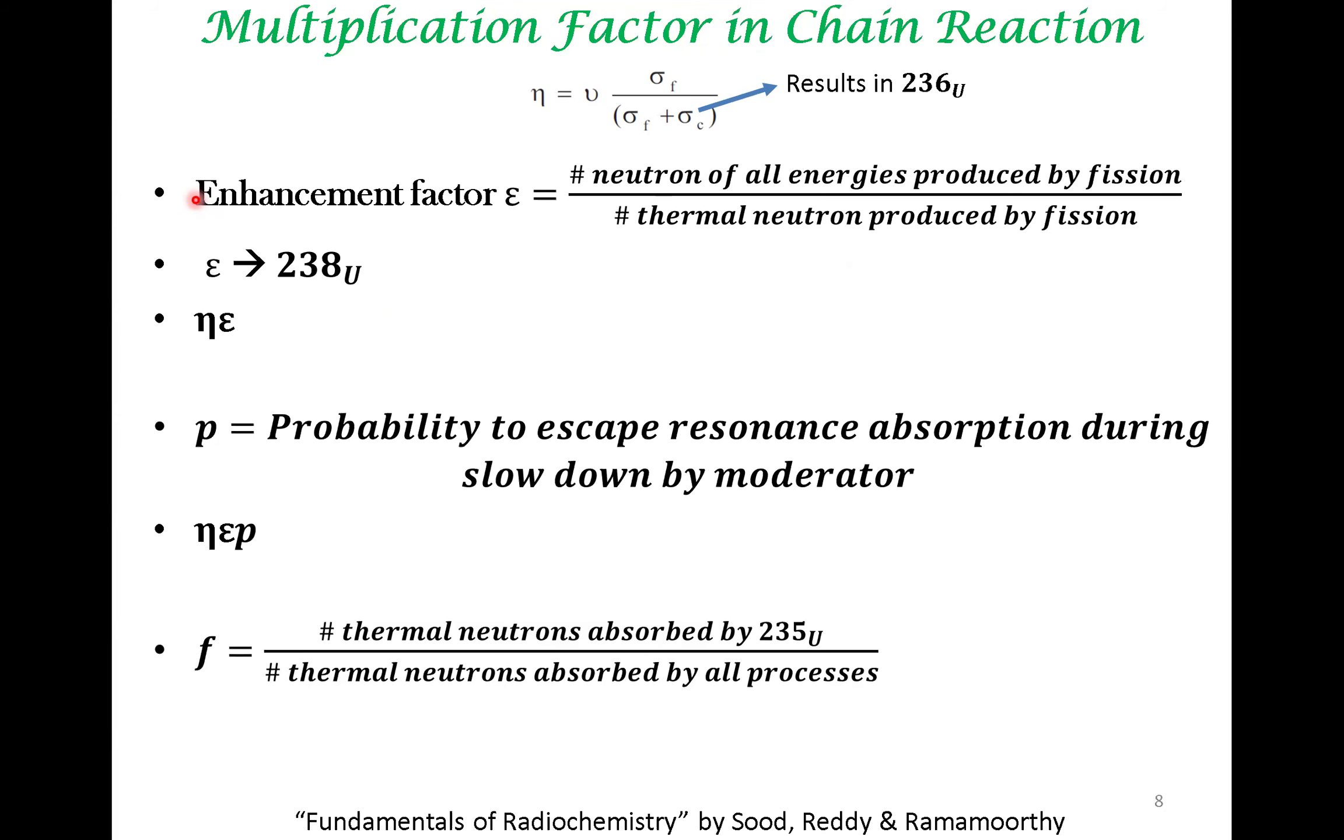When you put all these things together, you compute what is called the multiplication factor in a chain reaction. That is given by K_infinity, wherein you have multiplied eta, epsilon, probability factor to escape resonance, and absorption factor defined in the following manner.